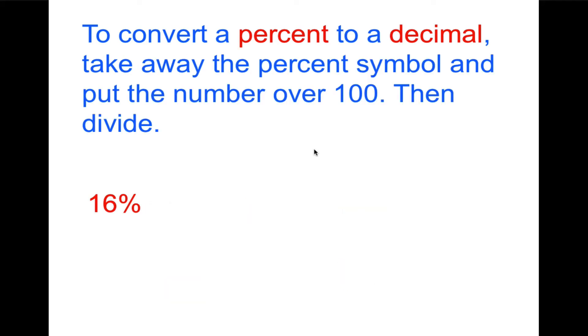Converting a percent to a decimal is a lot like converting a percent to a fraction, except then you divide. To convert a percent to a decimal, take away the percent symbol and put the number over 100, then divide. So 16%, as we learned before, would be the same as 16 over 100. Only now, instead of reducing as we would for a fraction, we'll divide. Since dividing by 100 is just as easy as multiplying by 100, this is going to be as simple as moving the decimal two places to the left. So the answer is 0.16. Why don't you try these three and then check back with me.